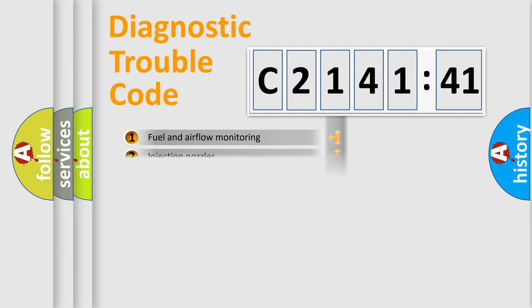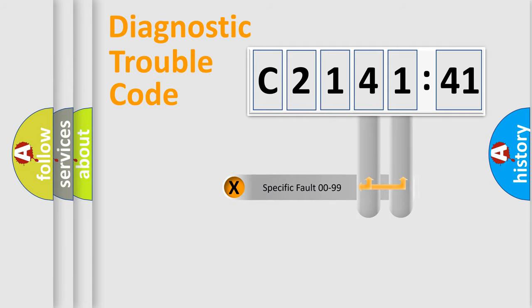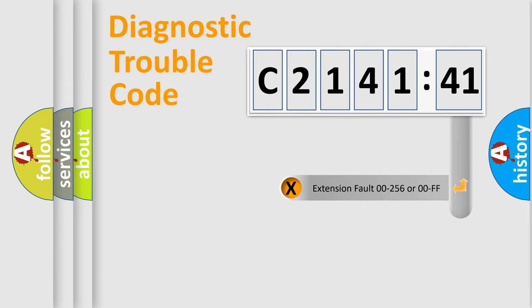The third character specifies a subset of errors. The distribution shown is valid only for the standardized DTC code. Only the last two characters define the specific fault of the group.